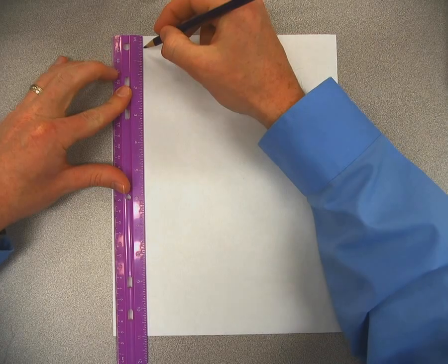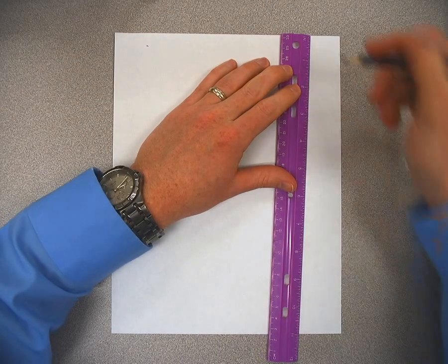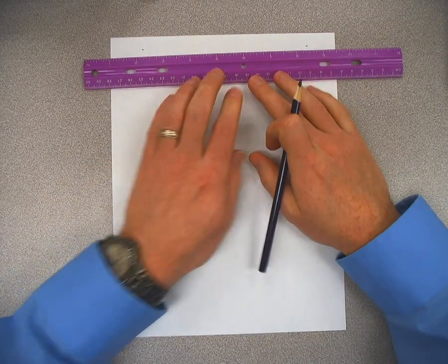So our first line is going to be at half an inch. So I'm going to mark half an inch on both sides and then draw my line.